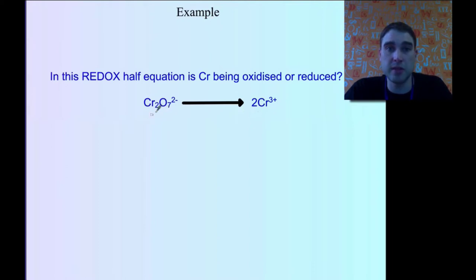We'll do the same process. This time we've got 2x because we've got 2 chromiums. So 2x, plus 7 oxygens - 7 times minus 2 - equals minus 2. That's our charge there.